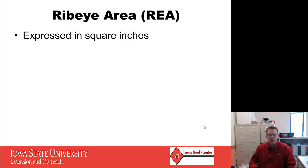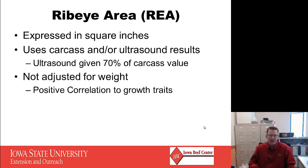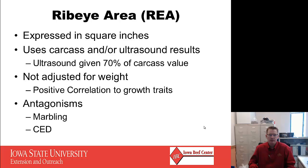Ribeye area is expressed in square inches and uses data from both carcass and ultrasound. It's important to understand that ultrasound is only given 70% of the carcass value that a carcass ribeye area is given, because the genetic correlation of ultrasound ribeye area to carcass is about 0.7. It is not adjusted for weight, so it has a very positive correlation with the growth traits — bigger cattle have bigger ribeyes. Over-selection for ribeye area might also cause some increases in cow size. It also has some antagonisms: cattle with large ribeyes have a harder time grading choice, so a larger ribeye EPD would have an antagonism to marbling EPD.